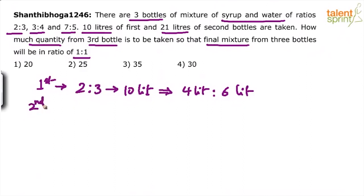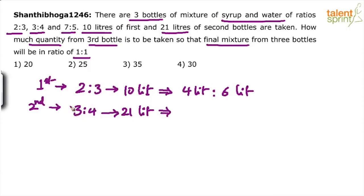Similarly, the ratio in the second bottle is 3:4, and we have taken 21 liters. All this can be done mentally — you don't have to write every step on paper. Divide 21 in the ratio of 3:4. That's 7 parts total, and 21 divided by 7 is 3 liters per part. So 3 parts is 9 liters and 4 parts is 12 liters, giving us 9 plus 12 equals 21 liters.